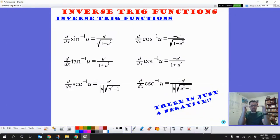So these are also ranked in likelihood of being on AP exams. The top one is most likely to see, then second most, and then least likely is the inverse for secant and cosecant.